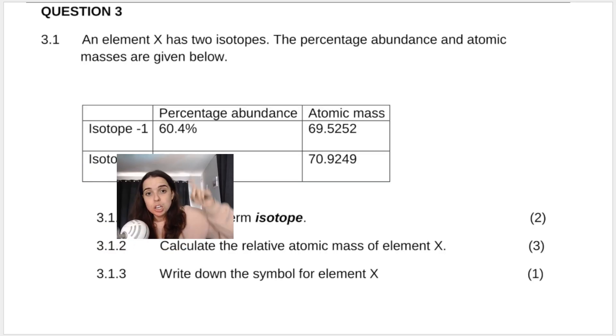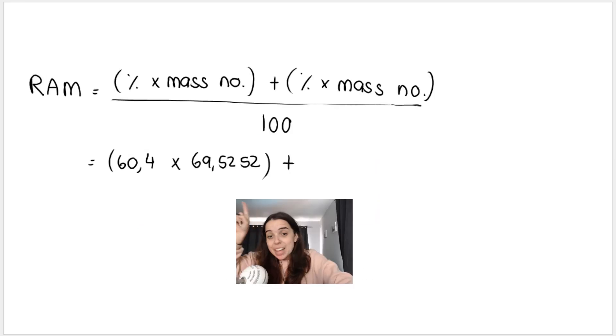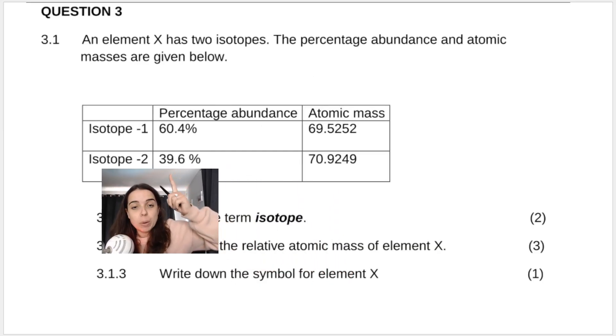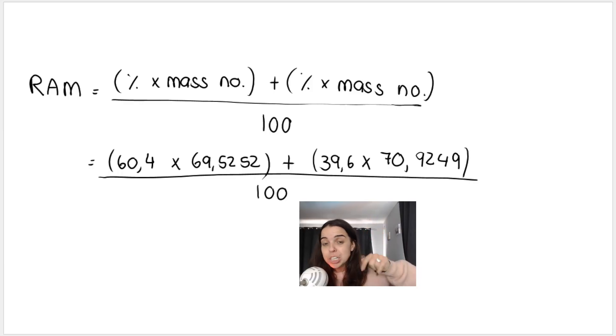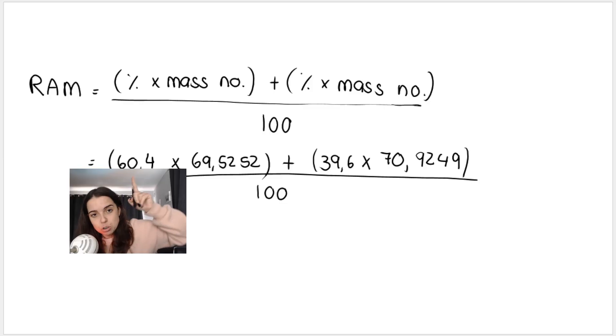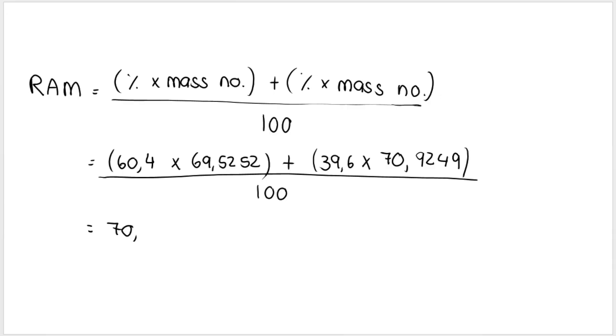So we take the percentage 60.4 and we multiply it by 69.5252. So that's the first isotope and then 39.6 multiplied by 70.9249. Just like that and we divide it by 100. Do not put the percentage signs in here and don't divide by 100 in these top brackets because we divide by 100 at the bottom. Type it in your calculator, press equals. And when I type that into my calculator, I get 70.079 and so on. You may now round off to two decimal places, 70.08. Technically the unit is atomic mass units. So you'll get a mark for substituting, and a mark for your answer.